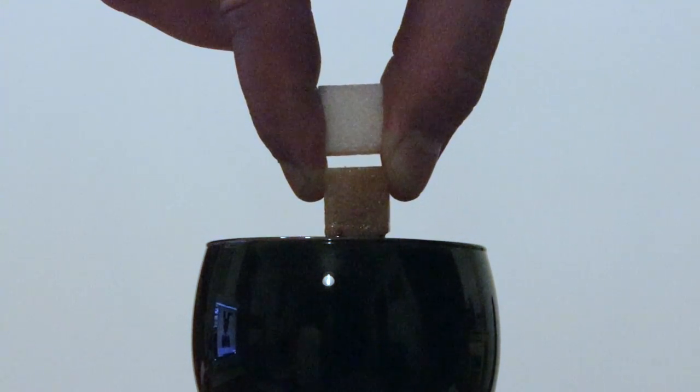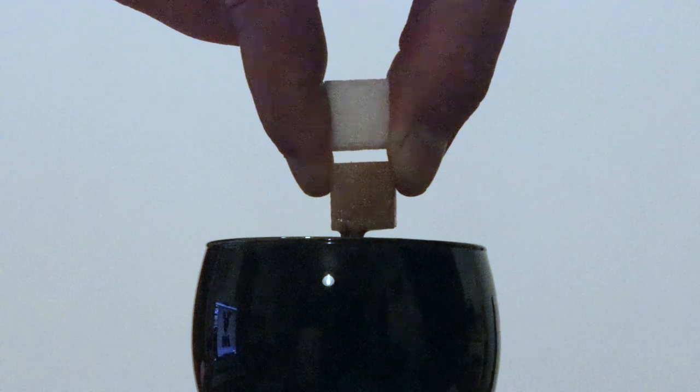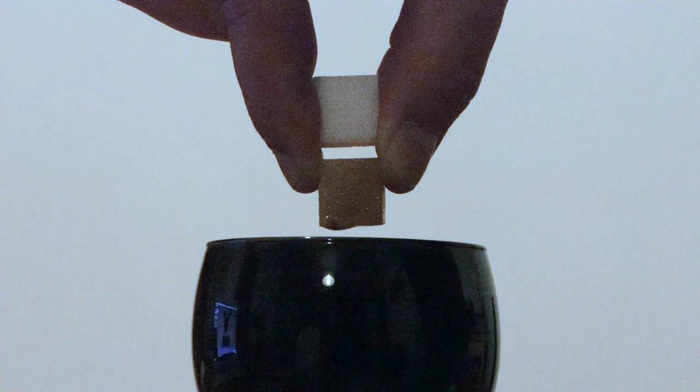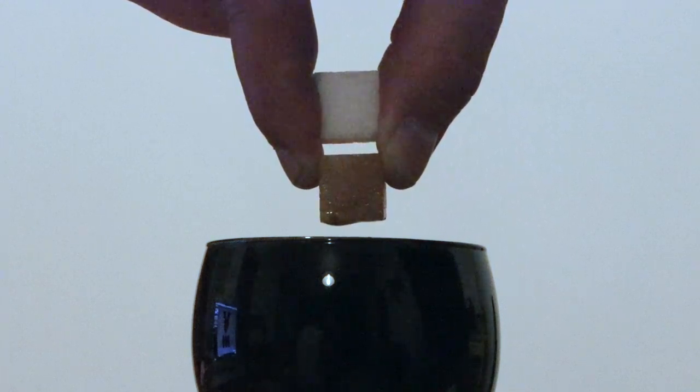C'est très simple, si vous passez un coup de binette dans votre sol, vous allez casser tous les canaux capillaires par lesquels l'eau remonte jusqu'à la surface pour pouvoir s'évaporer.